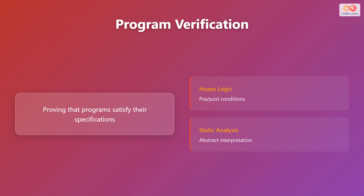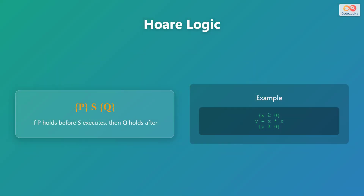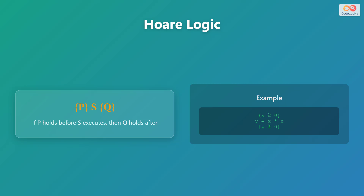Program verification focuses on proving that programs satisfy their specifications using mathematical and logical methods. Two common methods are Hoare logic and static analysis. Hoare logic is a formal system used to reason about the correctness of programs. It uses pre- and post-conditions to specify the expected state before and after a program execution. A Hoare triple, written as {P} S {Q}, means that if P, the precondition, holds before the execution of statement S, then Q, the post-condition, holds after the execution.